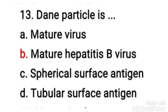Next question: the Dane particle is — mature virus, mature hepatitis B virus, spherical surface antigen, or tubular surface antigen? The right answer is option B, mature hepatitis B virus. It is a spherical particle found in serum in hepatitis B, a virion of the causative double-stranded DNA virus. It is 42 nanometers in size, capable of infecting liver cells known as hepatocytes. In addition to the Dane particles, filamentous and spherical bodies lacking a core can be found in the serum of infected individuals. So the Dane particle is the mature hepatitis B virus.